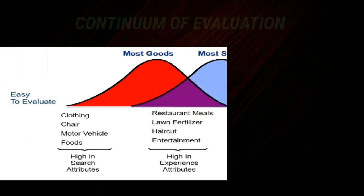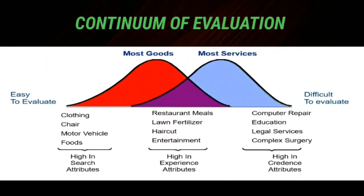All products can be placed on a continuum ranging from easy to evaluate to difficult to evaluate, depending on whether they are high in search, experience, or credence attributes. Most physical goods are located towards the left of the continuum because they rank high in search attributes. Most services tend to be located from the center to the right, as they tend to be high in experience and credence attributes. The harder it is to evaluate a service, the higher the perceived risk associated with that decision.